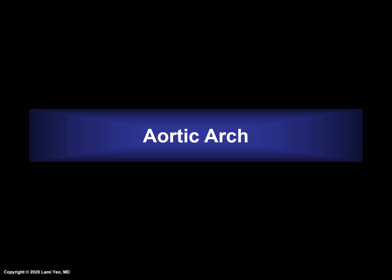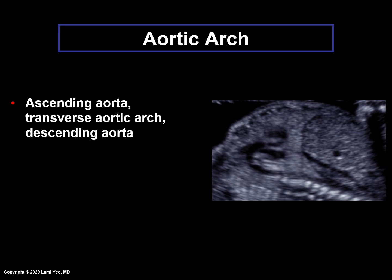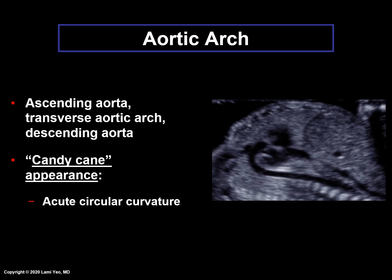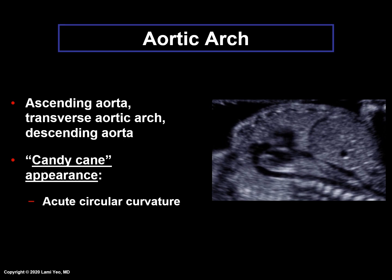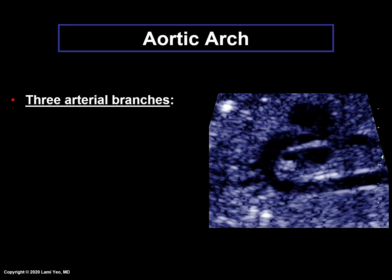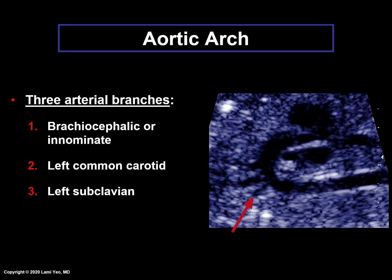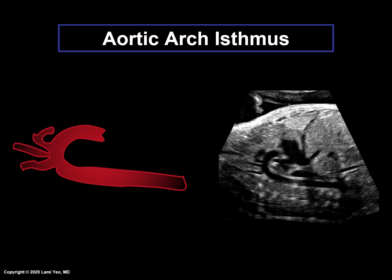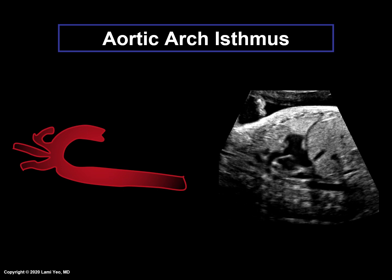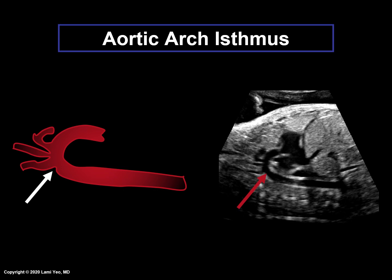Aortic arch. The left sagittal aortic arch is comprised of the ascending aorta, transverse aortic arch, and descending aorta. Since the aortic arch makes an acute circular curvature, it has a candy cane appearance. The aortic arch gives rise to three arterial branches: the brachiocephalic or innominate, left common carotid, and the left subclavian. The aortic isthmus is the narrowest part of the aortic arch, and is located between the origin of the left subclavian artery and the connection of the ductus arteriosus to the descending aorta.